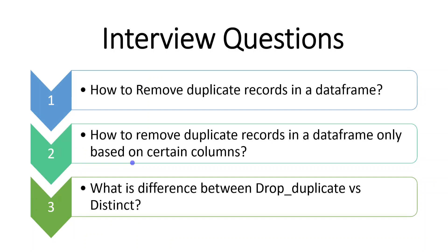There are some sample questions I have summarized around this concept. First: how to remove duplicate records in a dataframe? The answer is distinct or drop duplicate. Second: how to remove duplicate records based only on certain columns? For that, the answer would be only drop duplicates, not distinct. Third: what is the difference between drop duplicate and distinct? When you complete this video, you will get the answer.